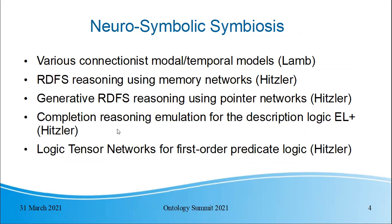In our talks, there were quite a few examples of symbiosis where neural and symbolic methods were combined. Lewis Lamb mentioned various connectionist modal and connectionist temporal models. Pascal Hitzler presented four different ways of combining neural and symbolic methods: using memory networks, generative reasoning using pointer networks, completion reasoning emulation, and logic tensor networks.